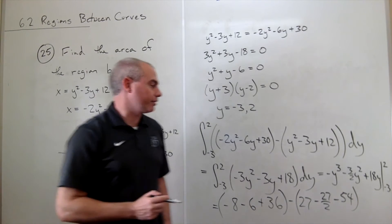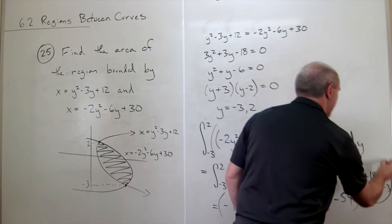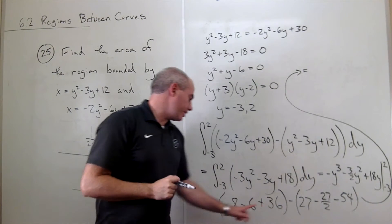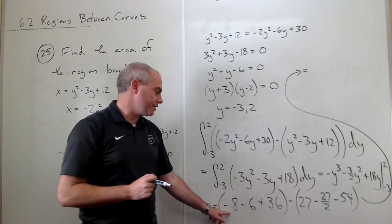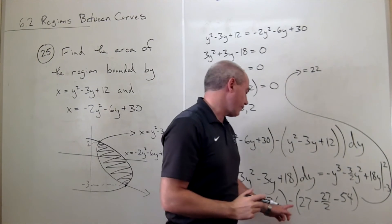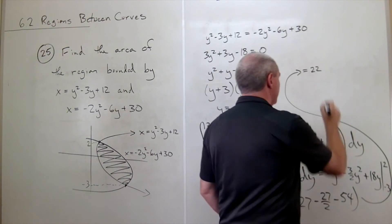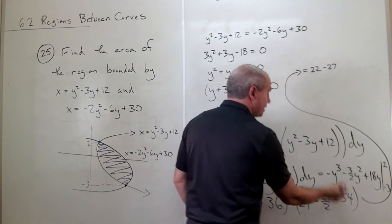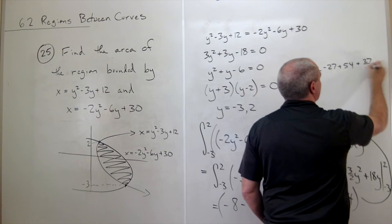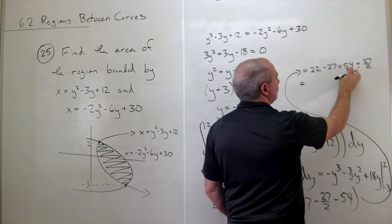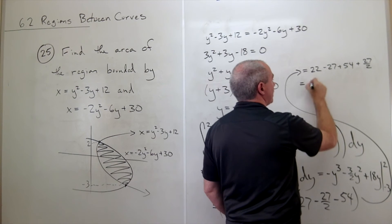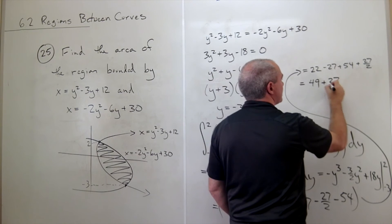Let's put that all together. We have 36 minus 6, which is 30, minus 8 is 22. So we've got a 22. Then we've got minus 27, minus 27, plus 54, and then plus 27 halves. Let's put all this together. 54 minus 27 is 27, plus 22 is 49, 49 plus 27 halves. 49 is otherwise known as 98 halves, plus 27 halves.